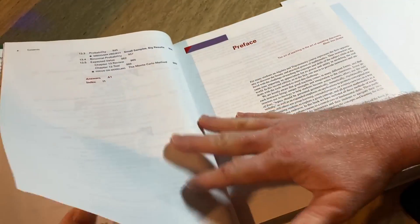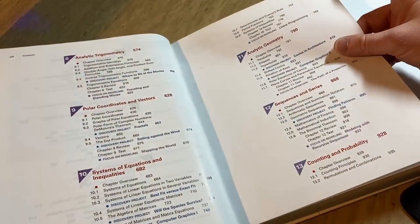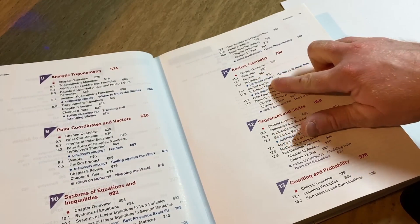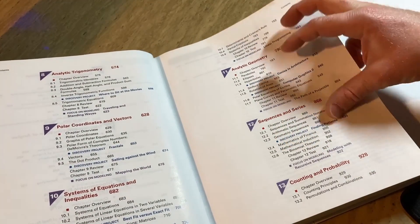So this book has a lot of trig. It's got conic sections. Those are like parabolas, ellipses, hyperbolas, circles, sequences, and series.